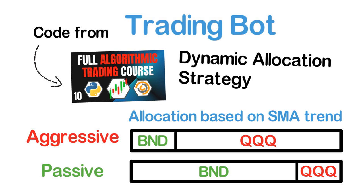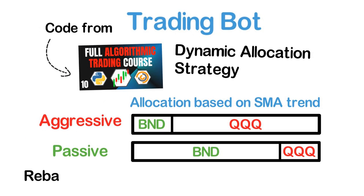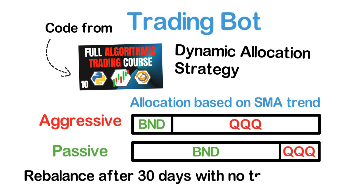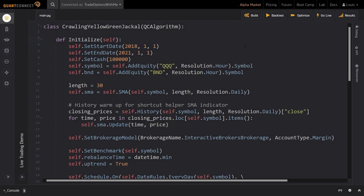We identify the current trend using a 30-day simple moving average of QQQ's price. If the average is below QQQ's price, we consider that to be an uptrend and vice versa. If the trend does not change for 30 days, we rebalance our portfolio back to the 80-20 or 20-80 allocation. Let's now head over to QuantConnect and take a quick look at this algorithm before we deploy it to live trading.